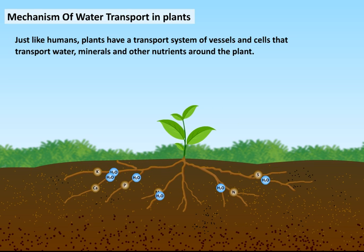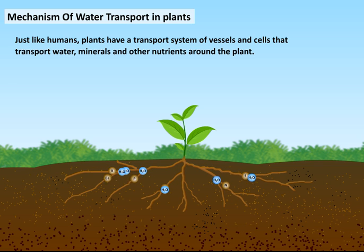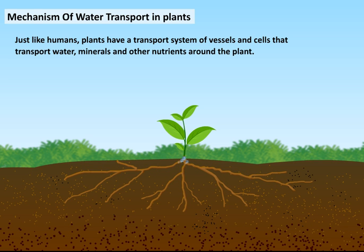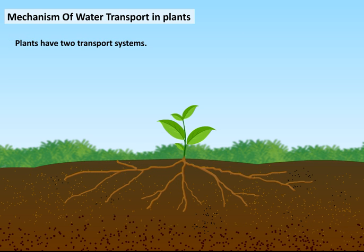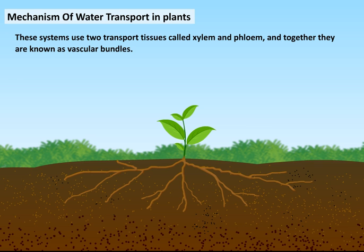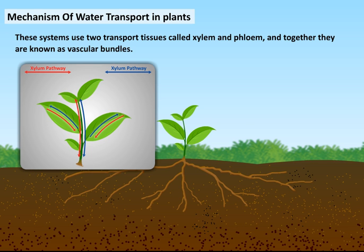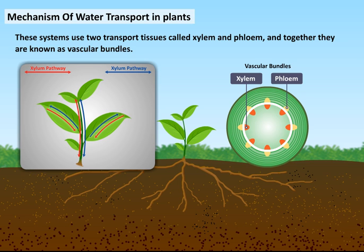Just like humans, plants have a transport system of vessels and cells that transport water, minerals and other nutrients around the plant. Plants have two transport systems.